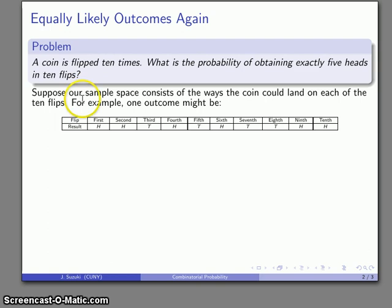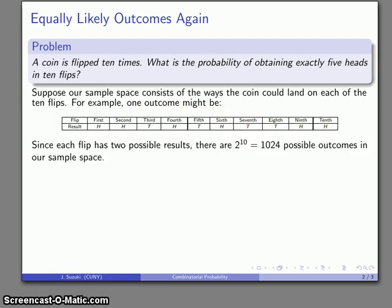And so if this is one outcome in our sample space, the thing we can start with is that each of the places here has two possible choices: the coin either lands heads or tails. And so that tells me that there's 2 to the 10th, 1,024 possible outcomes in our sample space.